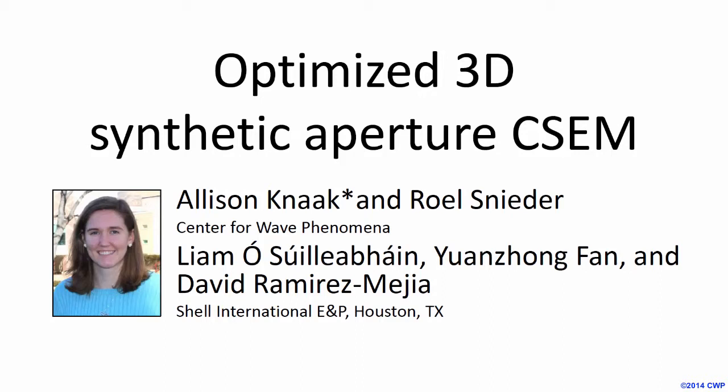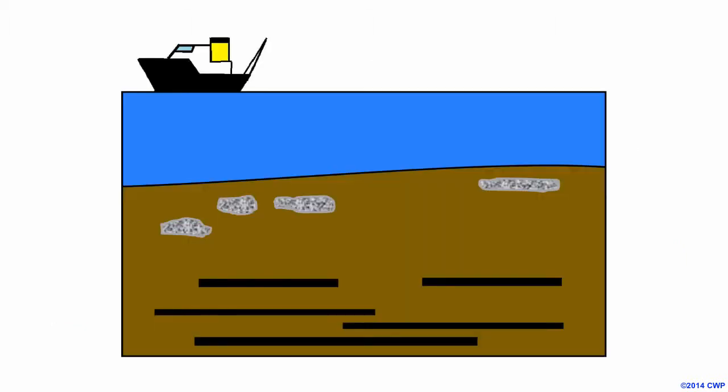Today I'm going to show you our most recent results of applying optimized 3D synthetic aperture to control source electromagnetics. Part of the motivation for this research is that we're looking for smaller, thinner reservoirs in more complicated settings, such as shallow water or in the presence of gas hydrates. These reservoirs could be vertically stacked or even laterally separated, and all these things lead to difficulties in finding and extracting hydrocarbons.